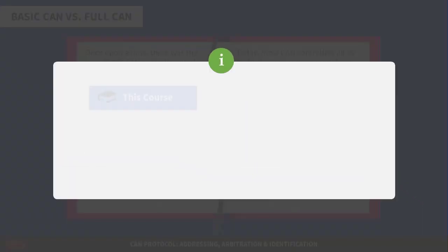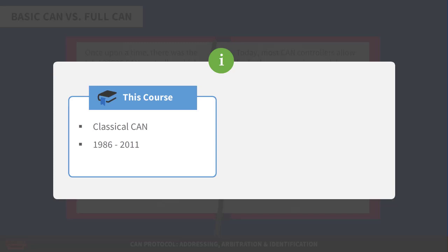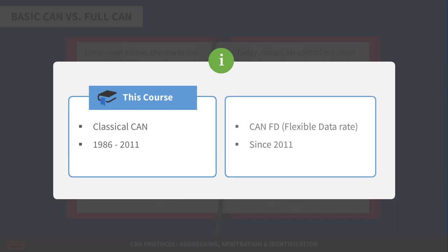Just to clarify, this course is providing an introduction to the classical CAN bus. All the information here describes CAN as it was known from the original adoption in 1986 until 2011, what is now being called Classical CAN. In 2011, however, Bosch began development of a new iteration of CAN, dubbed CAN-FD. The FD stands for Flexible Data Rate.